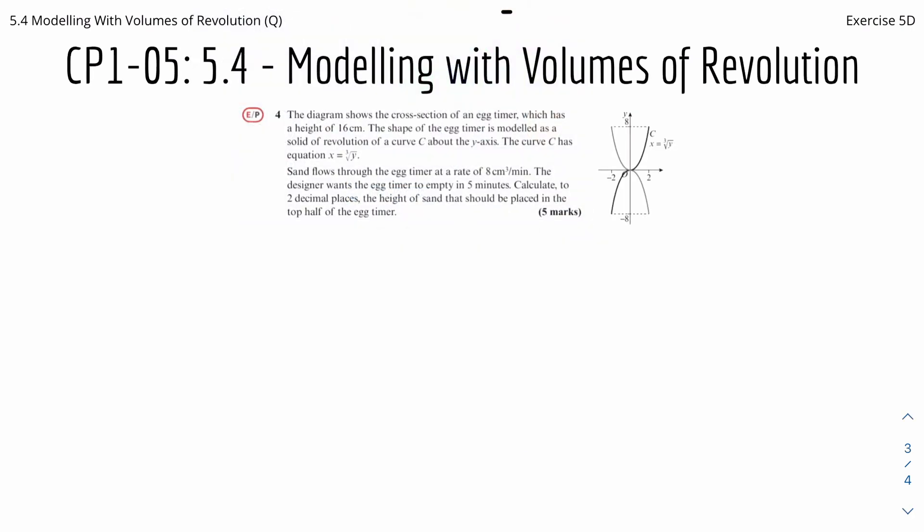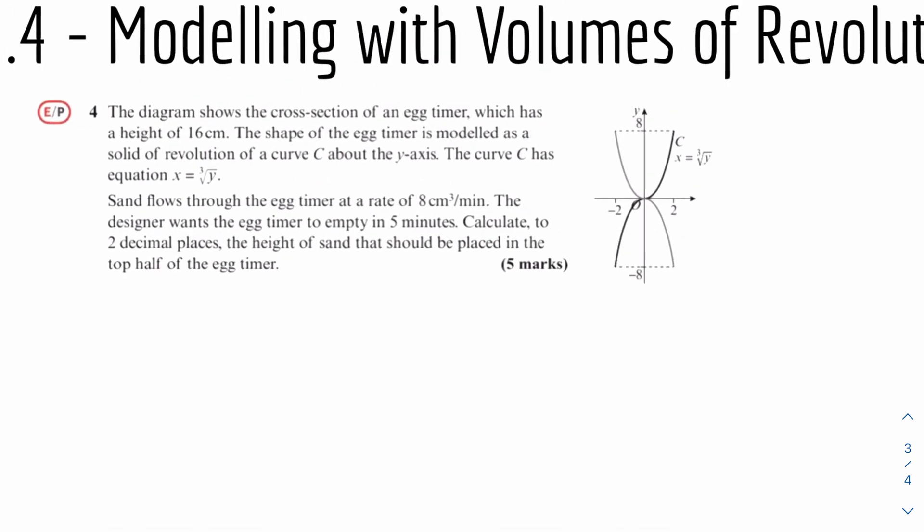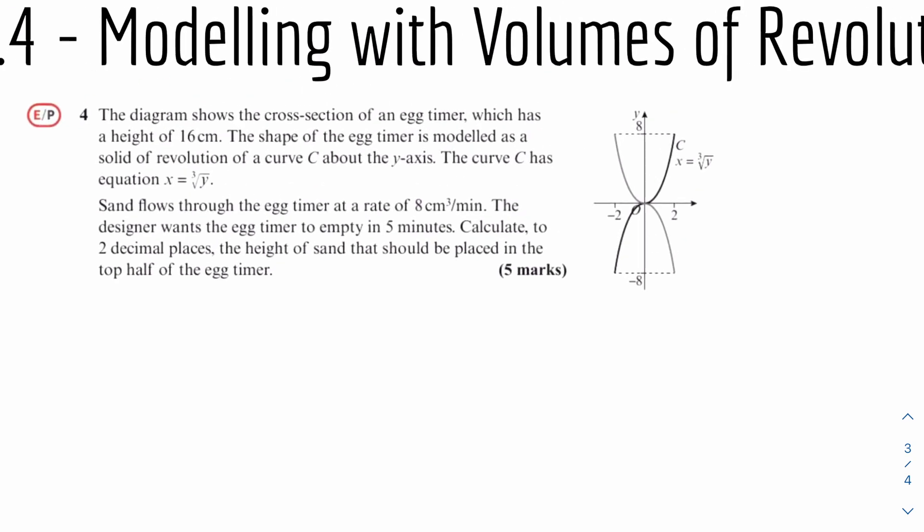For the next question, the diagram shows the cross section of an egg timer which has a height of 16 centimeters. The shape of this egg timer is modeled as a solid of revolution of curve C about the y-axis. The curve C has equation x equals the cube root of y. Sand flows through the egg timer at a rate of 8 cm cubed per minute, and the designer wants the egg timer to empty in 5 minutes. Calculate to two decimal places the height of the sand placed in the top half of the egg timer.